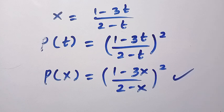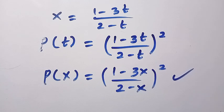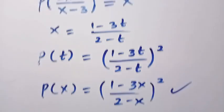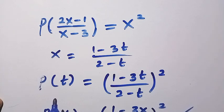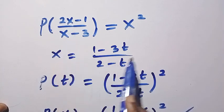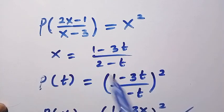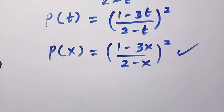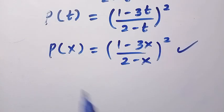Now, how can we verify if this result satisfies the initial equation? To verify this, we come back to the given domain expression, which is (2x minus 1) over (x minus 3), and replace every single x with (1 minus 3t) divided by (2 minus t). We will compute both the numerator and the denominator separately.